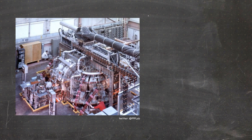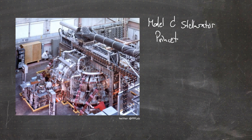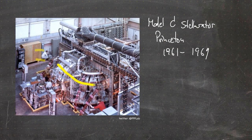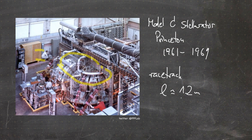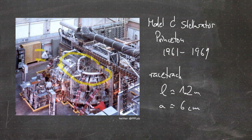Now let's look at a few stellarator realizations. The Model C stellarator was a very early device in operation in Princeton from 1961 until 1969. From the photograph you can see a person standing there to give an idea of size — the stellarator is in an elongated racetrack configuration approximately 1.2 meters long, with a plasma radius of about six centimeters.